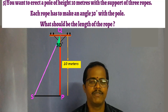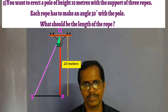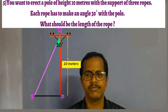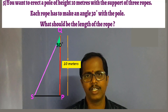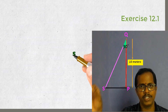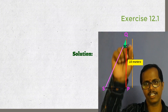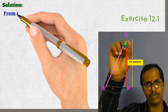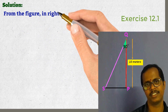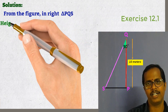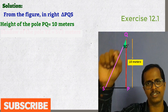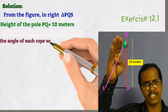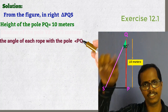Using this length you can find the length of all three ropes since all three ropes are equal in length. If we remove the picture, we get a right angle triangle PQS. From this right angle triangle PQS, we have the length of the pole PQ that is 10 meters, and also the angle between the pole and the rope that is 30 degrees. We need to find the length of the rope QS.